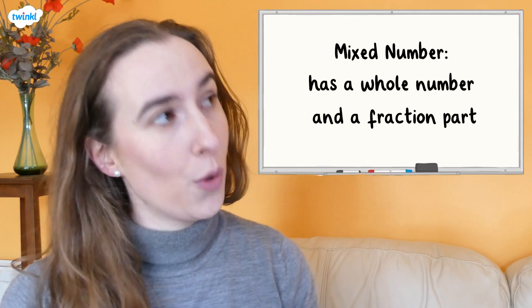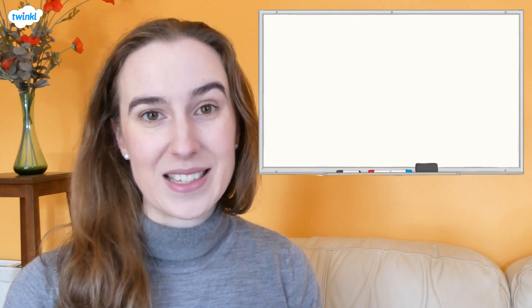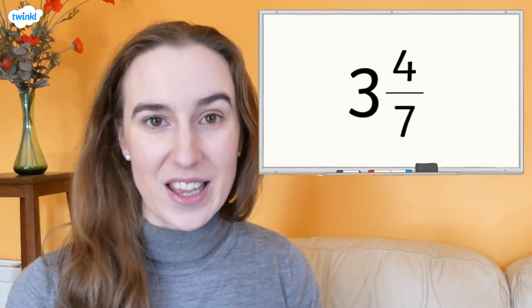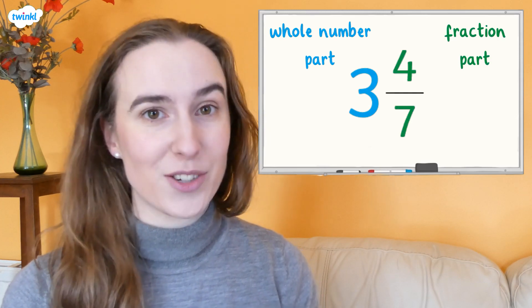A mixed number has a whole number part and a fraction part. In the mixed number three and four sevenths, three is the whole number part and four sevenths is the fraction part.